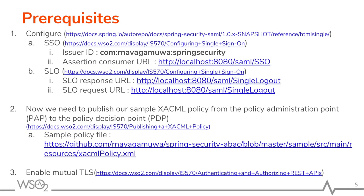To authorize a resource using XACML, first we need to publish the relevant XACML policy to the WSO2 IS PDP. For this demo, you can find the policy I am using in my GitHub repository. Refer to the provided link for more information on XACML policy publishing.